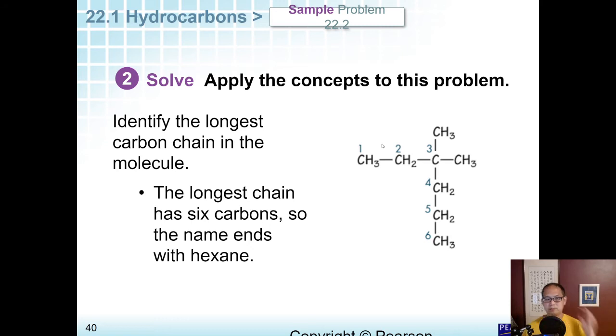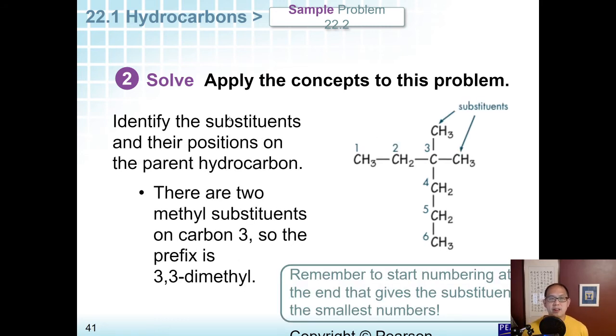The next thing we're going to do is identify the substituents and their positions on the parent hydrocarbon. Notice there's two different substituents. These both could have been hydrogens, but they're both replaced by CH3. So that means there's two methyl groups. We didn't do this on the last one, but there's two methyl groups on the same carbon. Since both of these are on the 3 carbon, and why did I name this 3? Because if I go 1, 2, 3, 4, 5, 6, that gives me a lower number than if I started from the bottom 1, 2, 3, 4. Like 3 is less than 4, so that's why we labeled it this way.